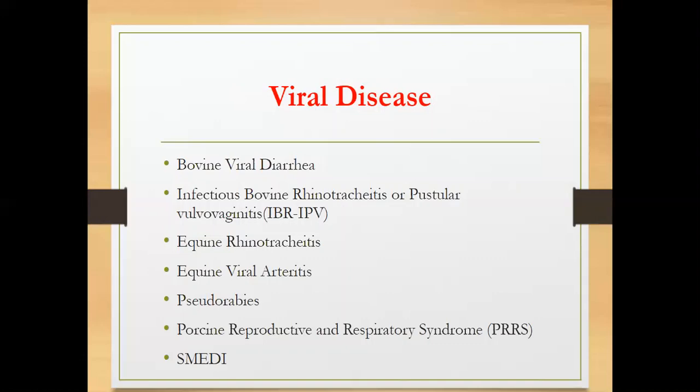For viral diseases, we have bovine viral diarrhea, which affects cattle. Its effect is abortion and congenital defects. If the fetus is not aborted, there can be congenital defects such as calves born with one eye, no anus, or an open abdomen. These types of congenital defects are sometimes referred to as monsters.